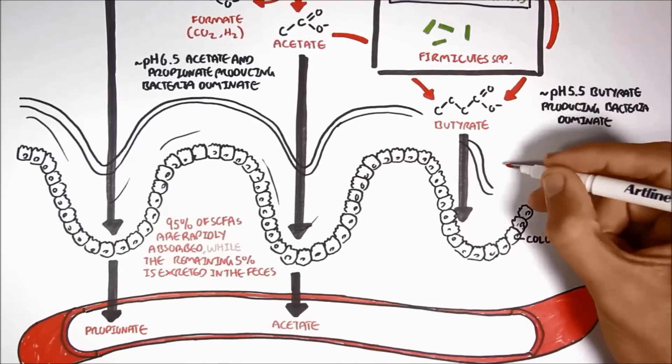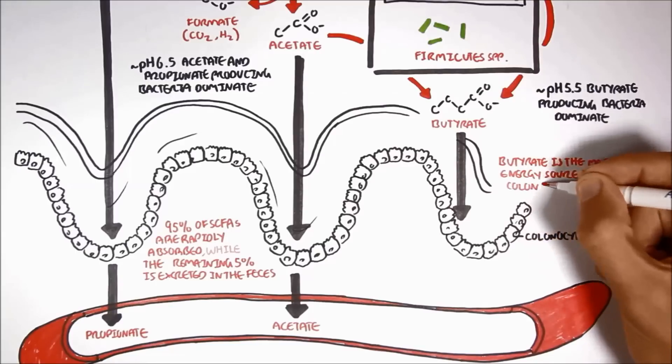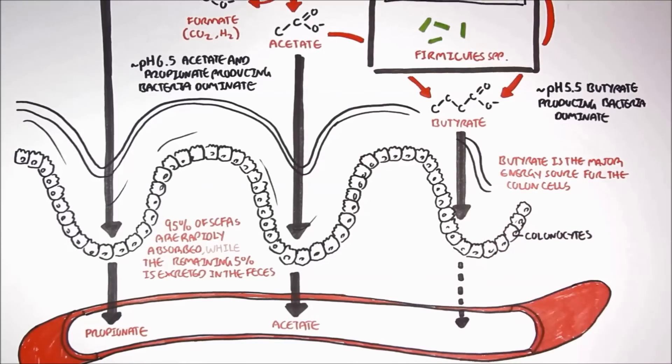Butyrate, on the other hand, is the major energy source for colon cells, resulting in low concentrations of butyrate in portal blood.